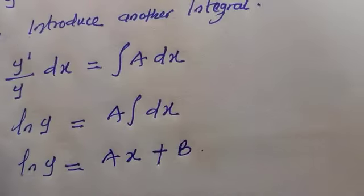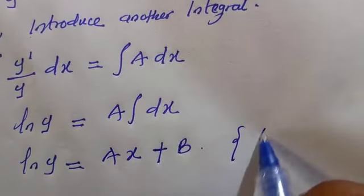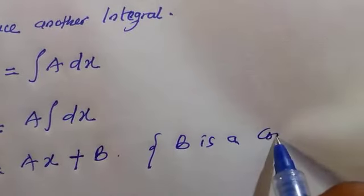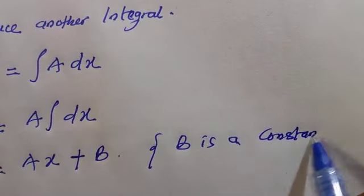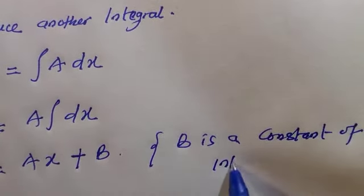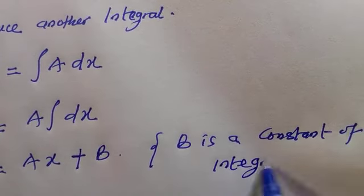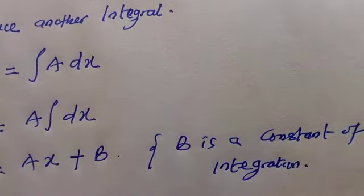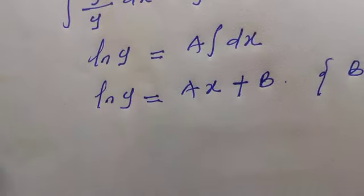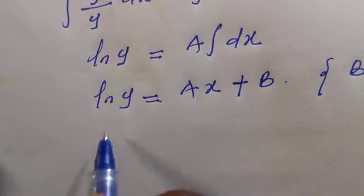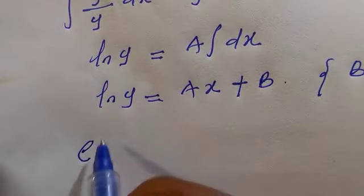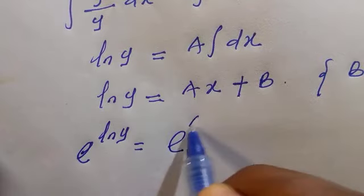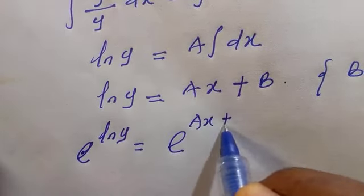Here b is also a constant of integration — you can choose it to be anything, such as c, l, or m, so long as it is a constant. To get y, we introduce the exponential on both sides a second time: e^(ln y) equals e^(ax + b), and since e cancels ln, we have y equals e^(ax + b).